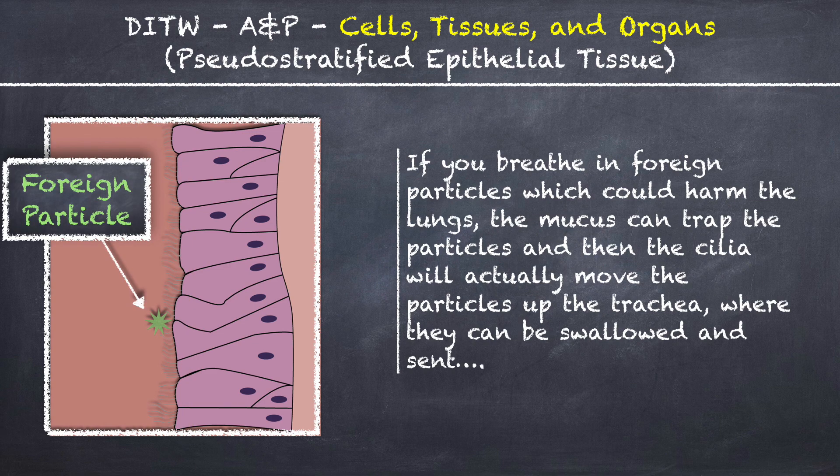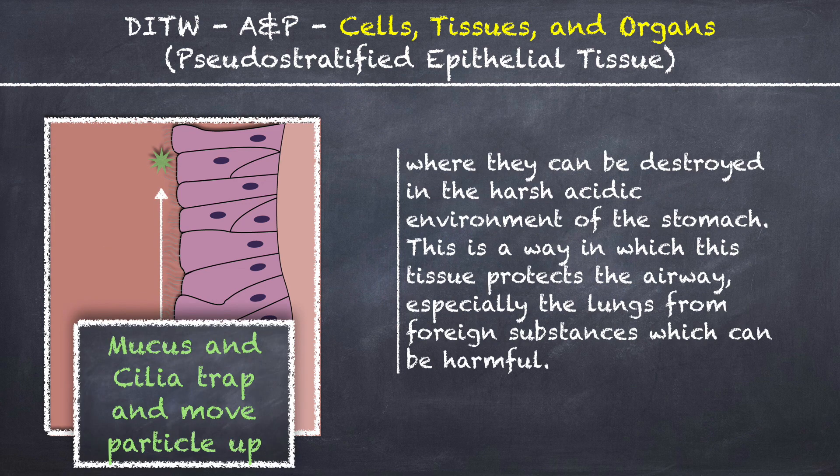If you breathe in foreign particles which could harm the lungs, the mucus can trap the particles and then the cilia will actually move the particles up the trachea where they can be swallowed and sent to the harsh acidic environment of the stomach to be destroyed. This is a way in which the tissue protects the airway, especially the lungs, from harmful foreign substances.